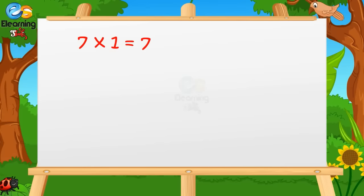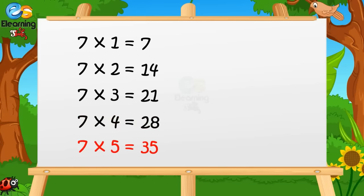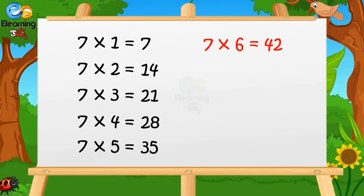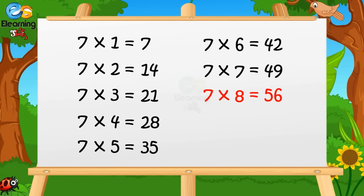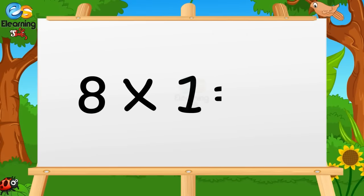7 ones are 7. 7 twos are 14. 7 threes are 21. 7 fours are 28. 7 fives are 35. 7 sixes are 42. 7 sevens are 49. 7 eights are 56. 7 nines are 63. 7 tens are 70.